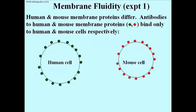Membranes are a protein mosaic. The protein mosaic is asymmetric, and we also know that it is a fluid mosaic. That is, the proteins are not fixed in place in the membrane, unable to move — but in fact they can move.